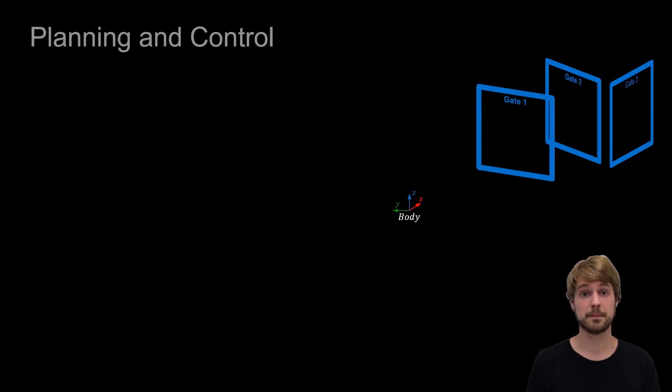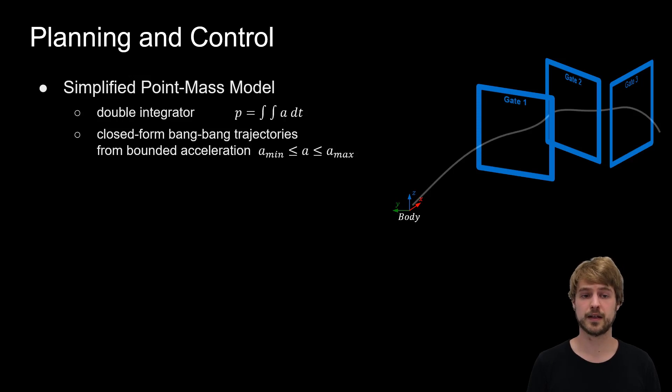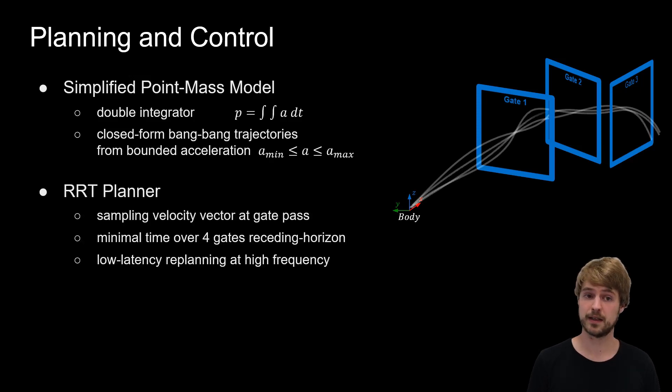For planning, we deploy a simplified point-mass model. This is a double integrator for which we can compute closed-form bang-bang trajectories from bounded accelerations. In an RRT planner, we then sample this over velocity vectors at gate paths and retrieve the minimum time trajectories over a receding horizon of four gates.